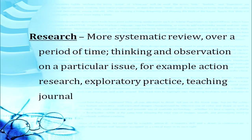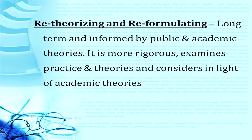After reviewing, we research — it is again review but in a systematic manner over a period of time. We observe on a particular issue and then take action, like undertaking action research. For example, the students in my class do not want to write — why, what are the reasons? So let us perform action research on it, through exploratory practices and teaching journals. Then re-theorizing and re-formulating things — long-term and informed by public and academic theories. This action is influenced by academic theories and is more rigorous.